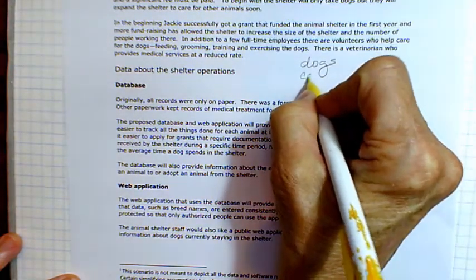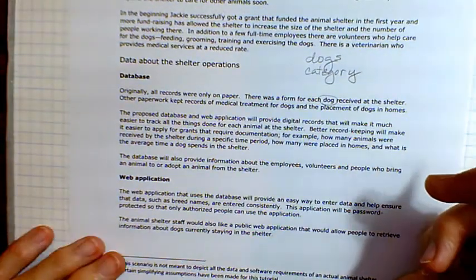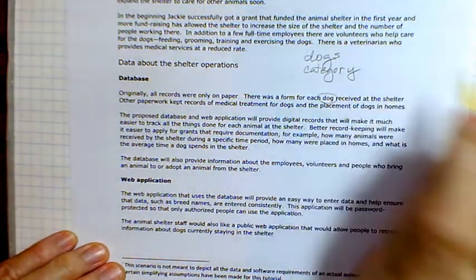Obviously, we need to keep track of dogs, and certain things we'll want to know about those dogs, like the category. Is it a chihuahua, a collie, a German Shepherd, things of that nature.